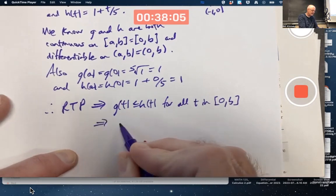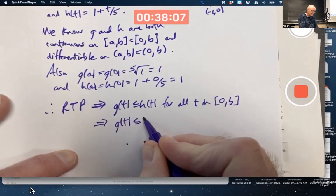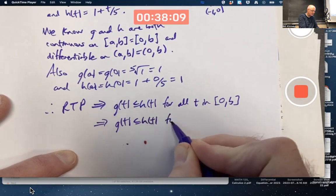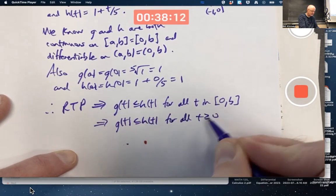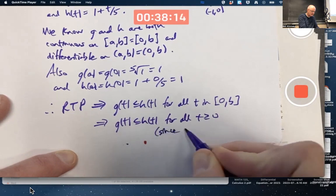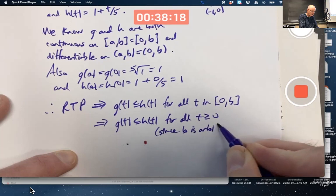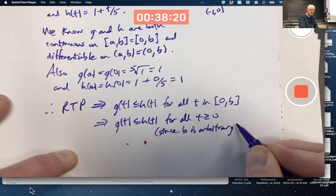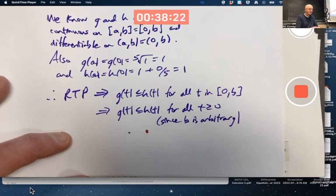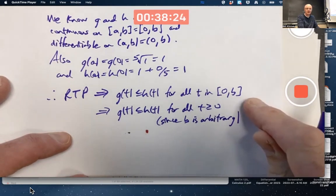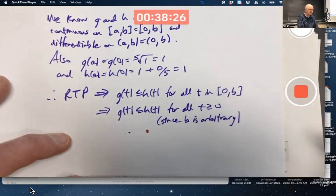And again, since b is arbitrary, this implies that this inequality is true for all t greater than or equal to zero. Since b is arbitrary - you know, b could be one, it could be ten, it could be a million, it could be a billion, it could be a googol, it doesn't matter - it's true over the interval there, so it's got to be true for all positive t.